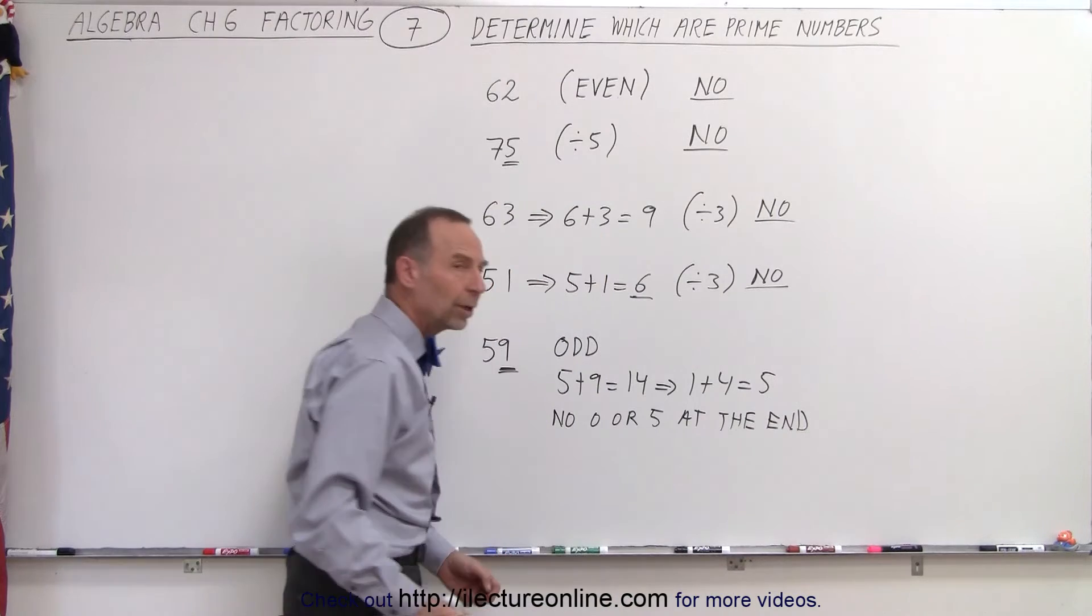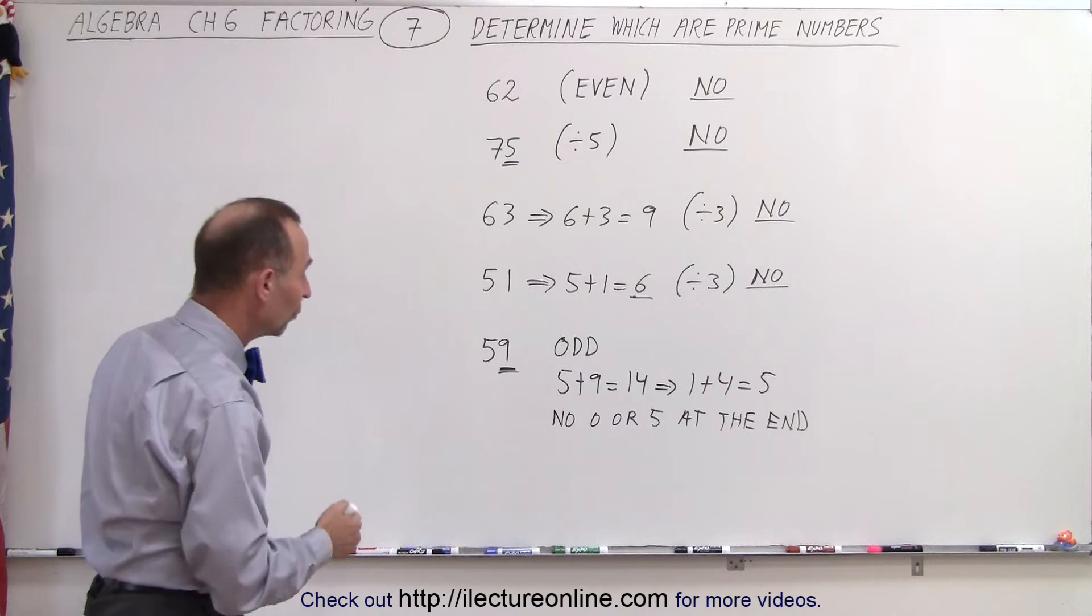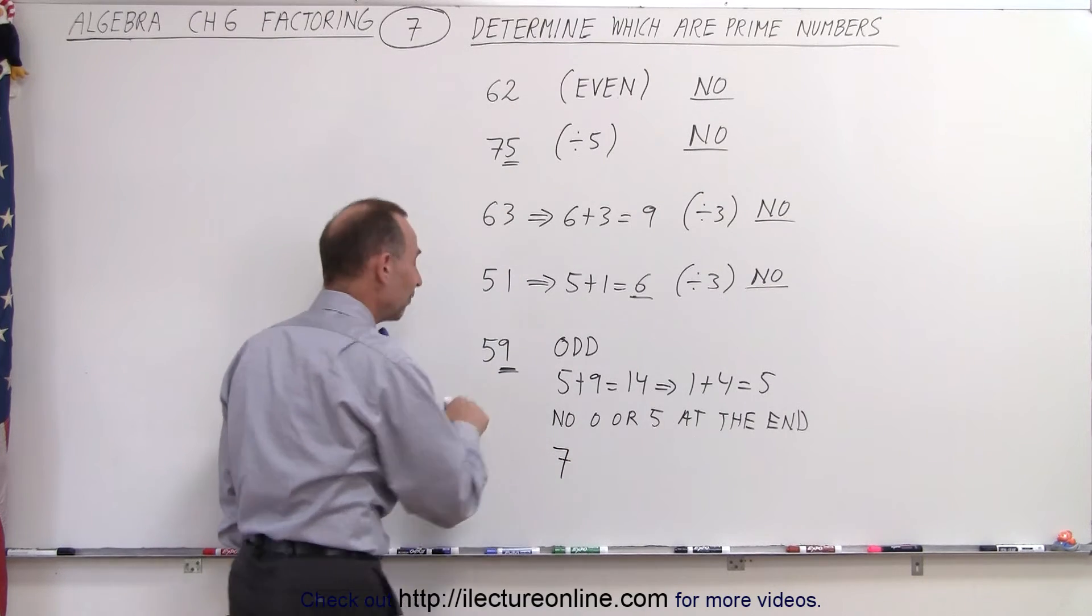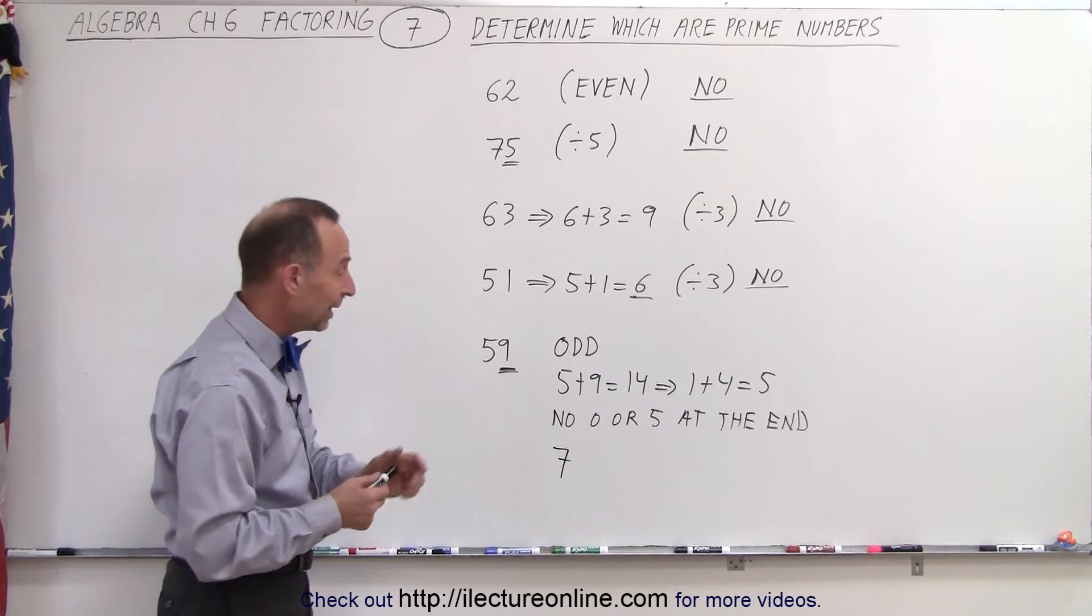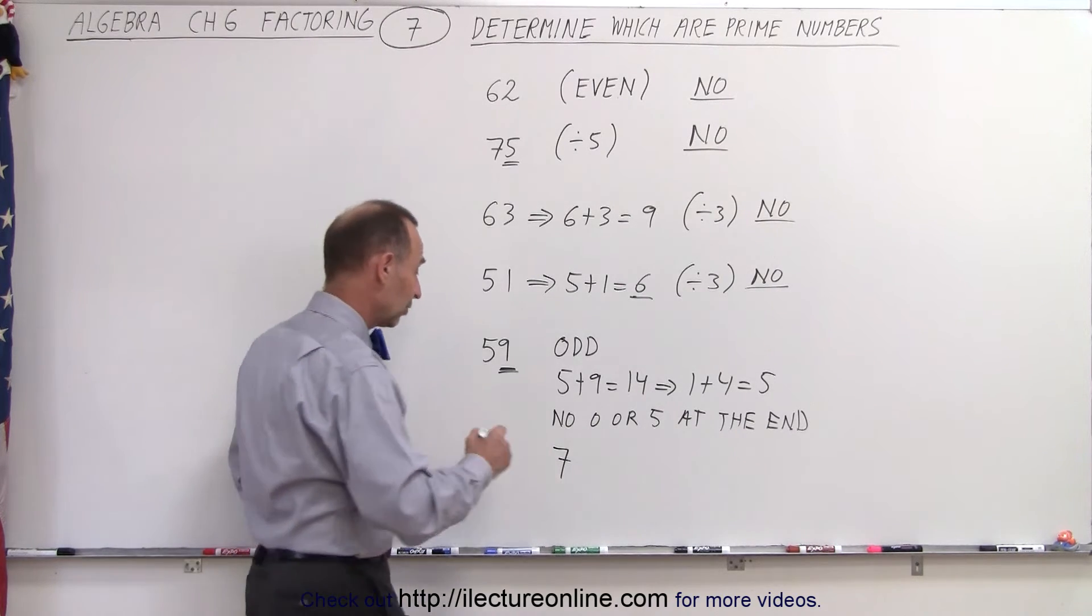So the next thing we can do is go down the list of prime numbers, smaller prime numbers, to see if they divide into 59. For example, the number 7. Does 7 go into 59 evenly? Well, we know that 8 times 7 is 56, 9 times 7 is 63, so the answer is no.